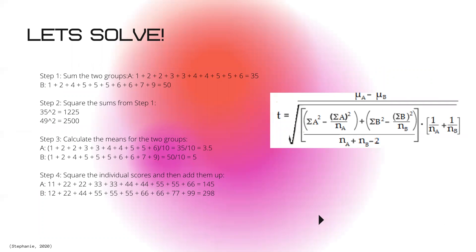Step one is to sum the two groups. We have data set A that equals 35, data set B equals 50. We're going to square the sum. So 35 squared is 1225 and 50 squared is 2500. Calculate the means for the two groups. We're going to add up all the numbers and divide by the number of variables, so 10.